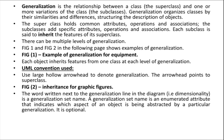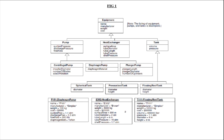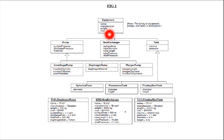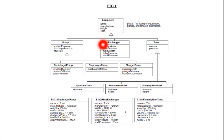Let me take the first example one by one. The superclass here is equipment. What are the attributes of the superclass equipment? The attributes of the superclass equipment are name, manufacturer, weight, and cost. Pump, heat exchanger, and tank are the subclasses of equipment.